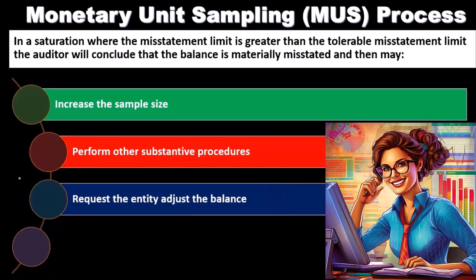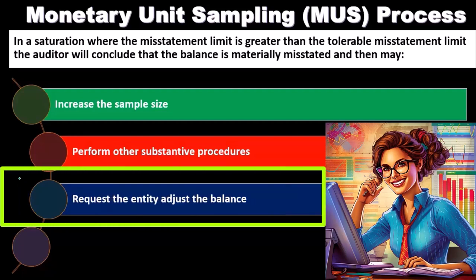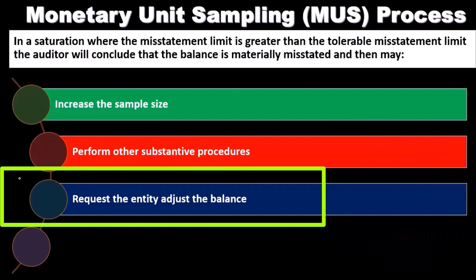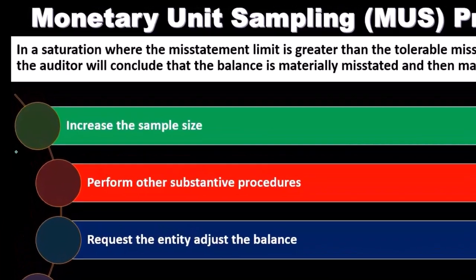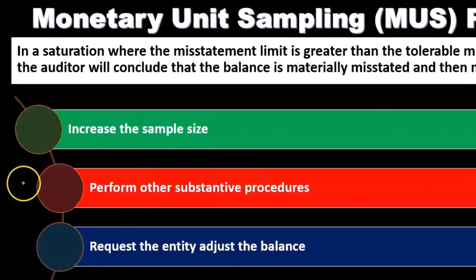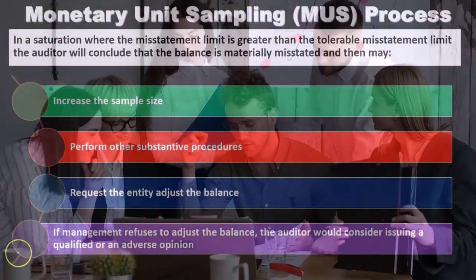We might do other procedures to determine what we believe the balance should be. We can also request the entity adjust the balance. If we've concluded the balance is misstated, increased the sample to double-check, done other substantive testing, and still find a misstatement, we'll request the entity make an adjustment so the balance is properly stated — allowing us to report it as properly stated in the audit report opinion.